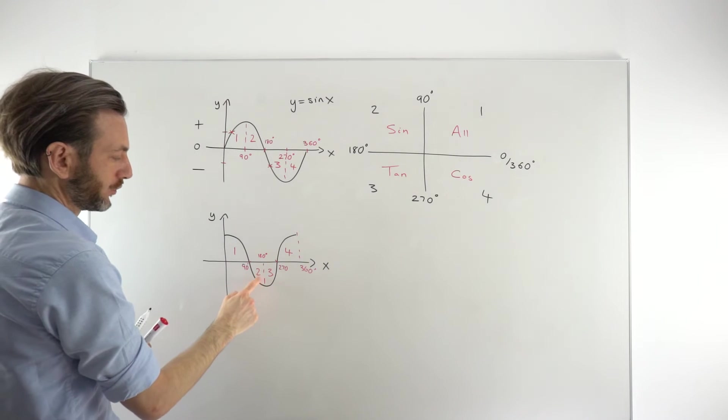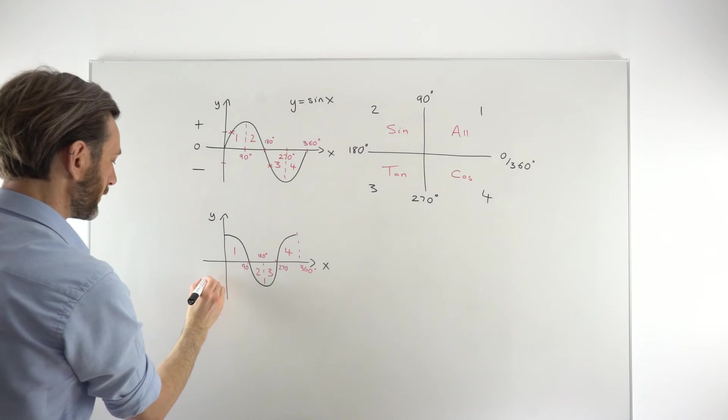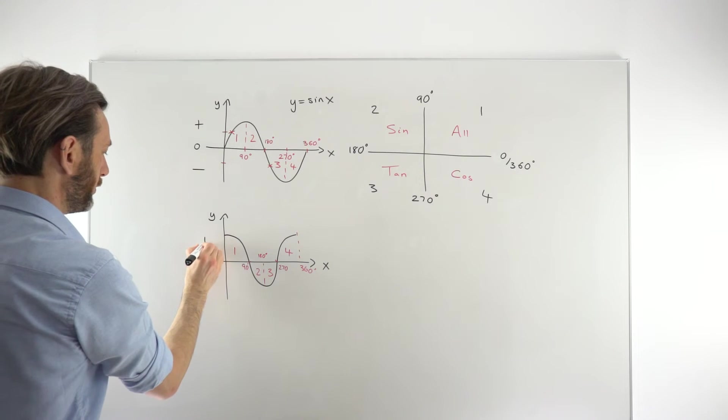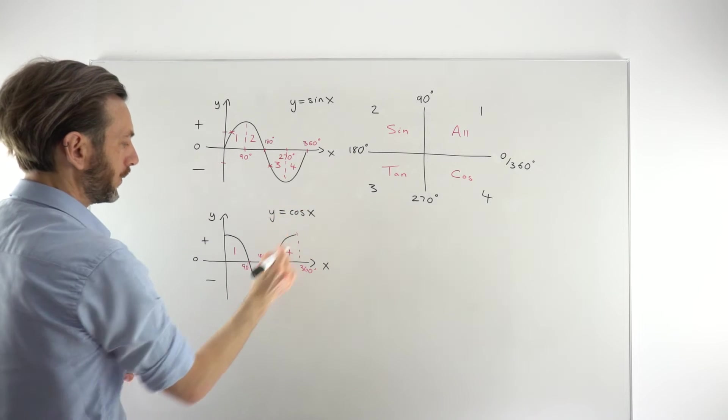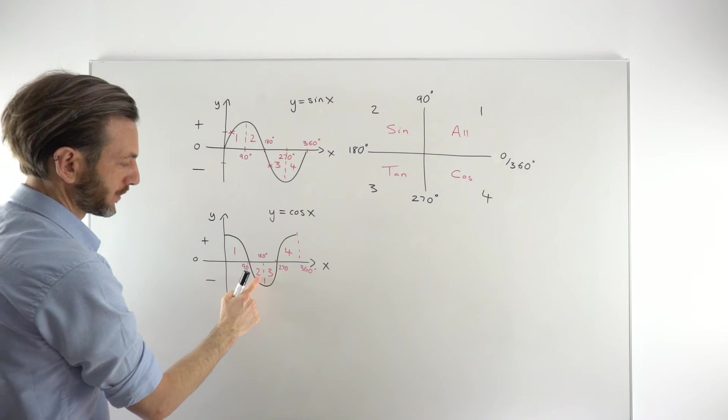Negative in quadrants 2 and 3. So remember, this is negative, 0, positive. And this is y equals cos x. So negative below the x-axis in 2 and 3.